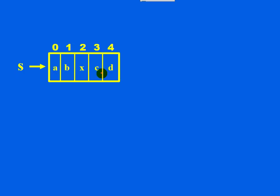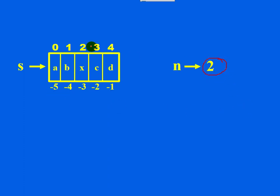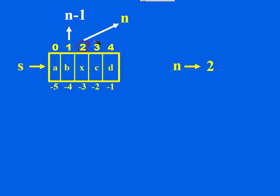Your string 's' points to the example string. This is forward indexing and this is backward indexing. Your n is pointing to index 2. If this is n, then the character just before it is at index n minus 1, and the character just after it is at index n plus 1.